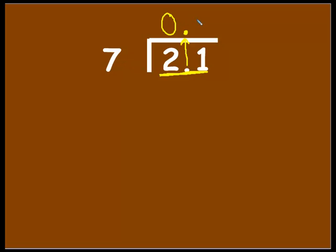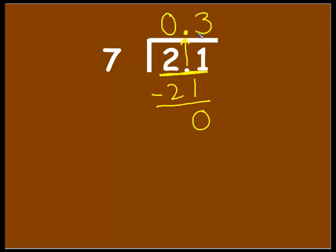We know that 7 times 3 is 21, so we go through that process — we just divided, then we're multiplying 7 times 3. Then we do our subtraction like normal, and we get 0. There's nothing to bring down, so our quotient is 3 tenths.